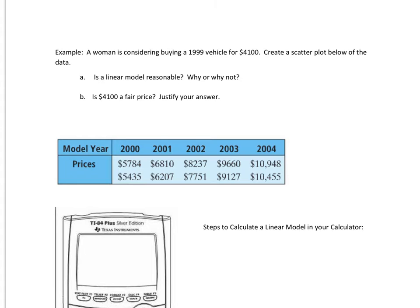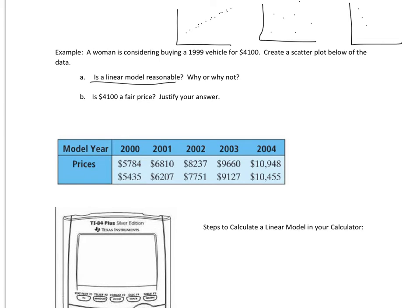For this problem, a woman is considering buying a 1999 vehicle for $4,100. First, create a scatter plot of the data. Then assess whether a linear model is reasonable — meaning when you plot these points, as the model year goes up the price goes up, so it should look roughly like a line. If the points are scattered all over the place it's not linear. If they form more of a curve, it also doesn't fit a linear model well.